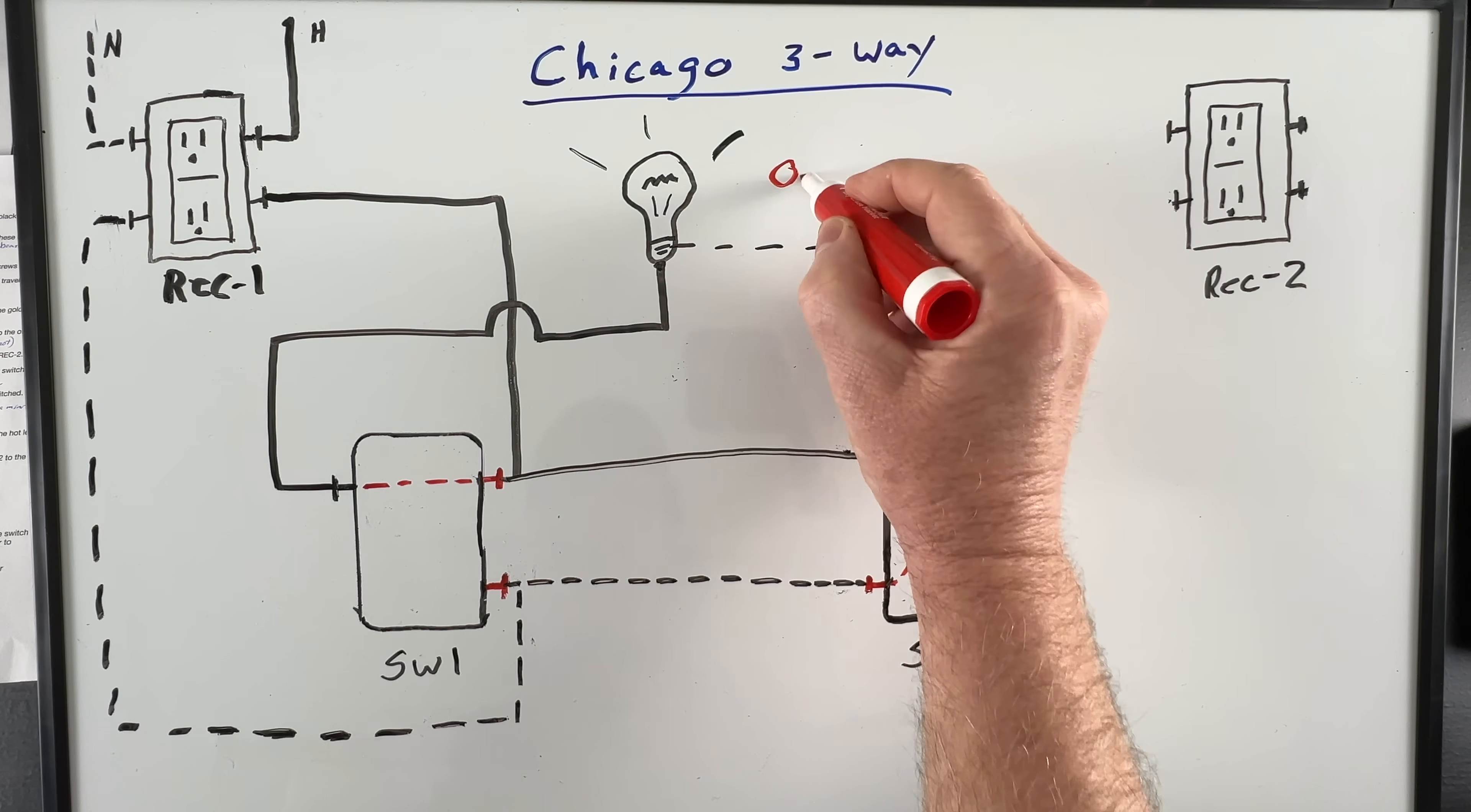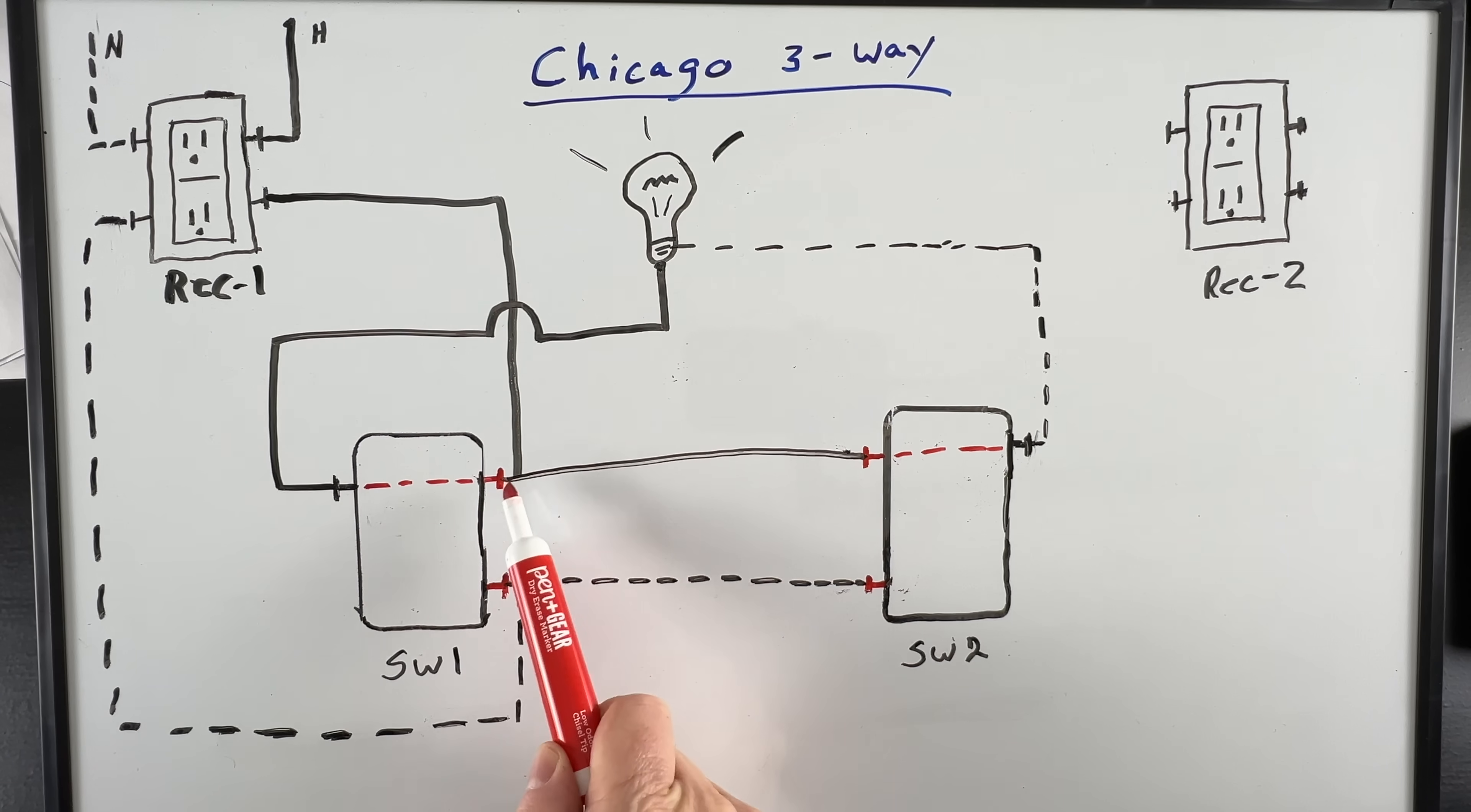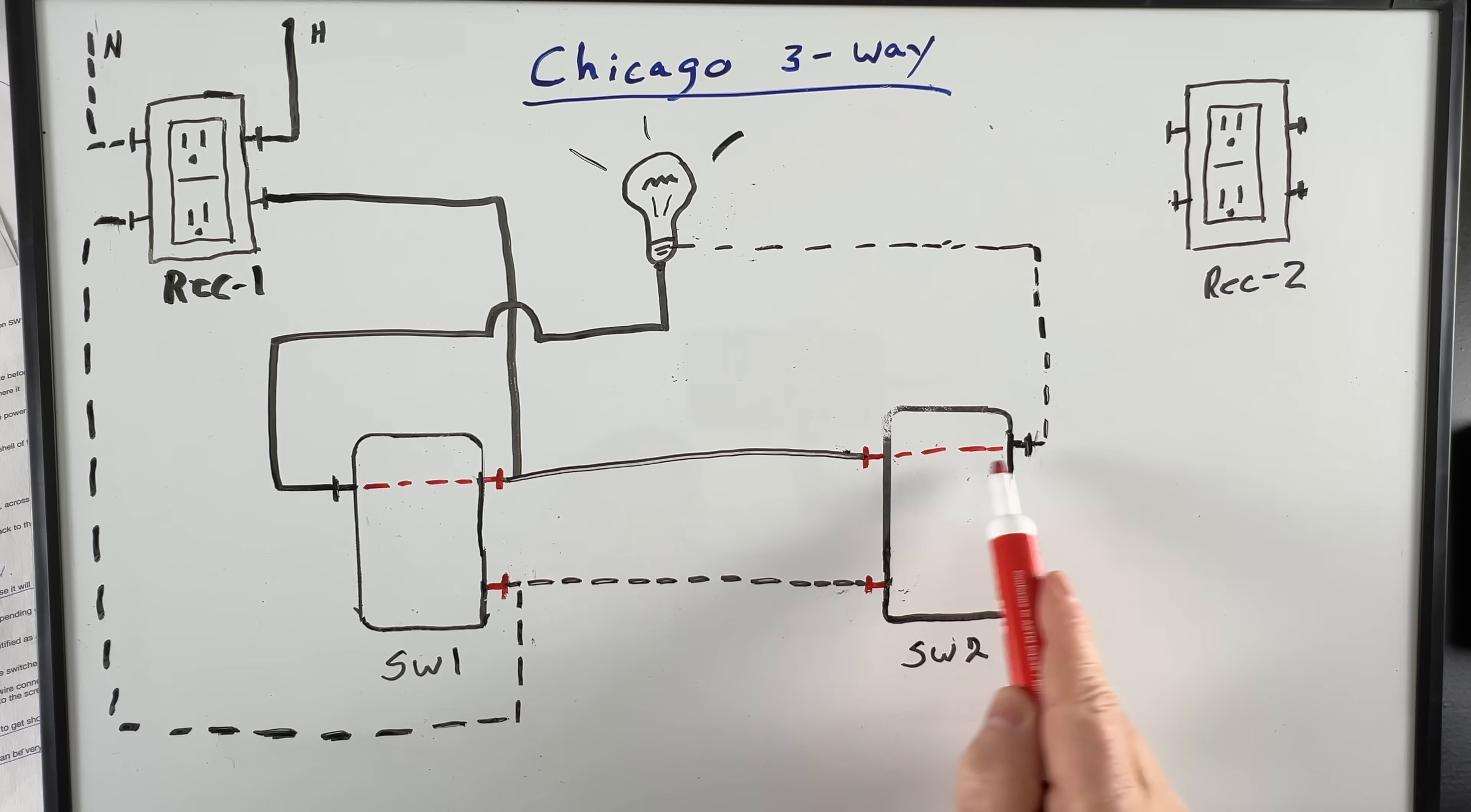But now let's move switch two to the up position. Line power comes from the receptacle through switch one and up to the light just like before. Now our neutral wire comes from the screw shell on the light, down across switch two, over to switch one where it also connects to line power.